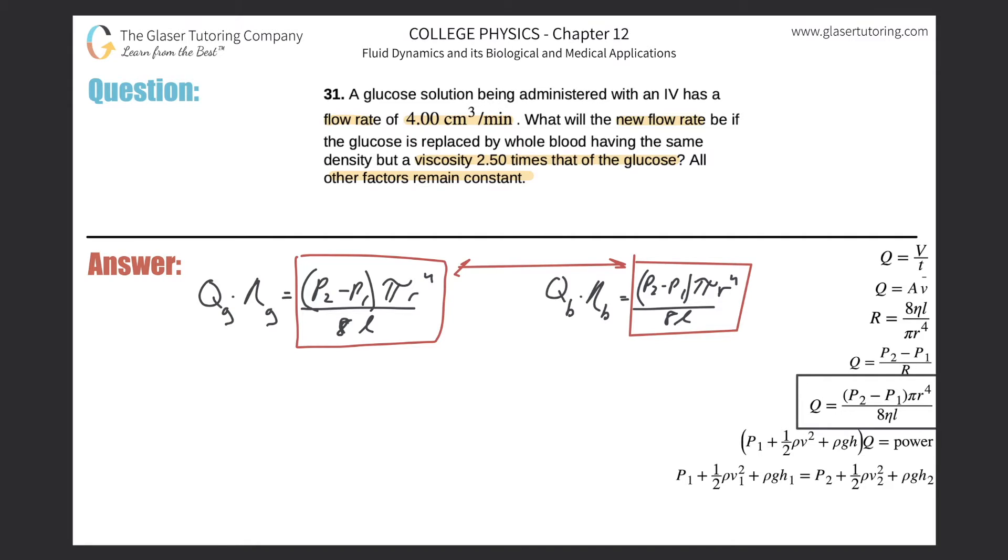So if those two things are equal, well these two things are also equal. So let's set them equal. So we have flow rate of glucose times the viscosity of glucose will equal the flow rate of whole blood multiplied by the viscosity of whole blood.